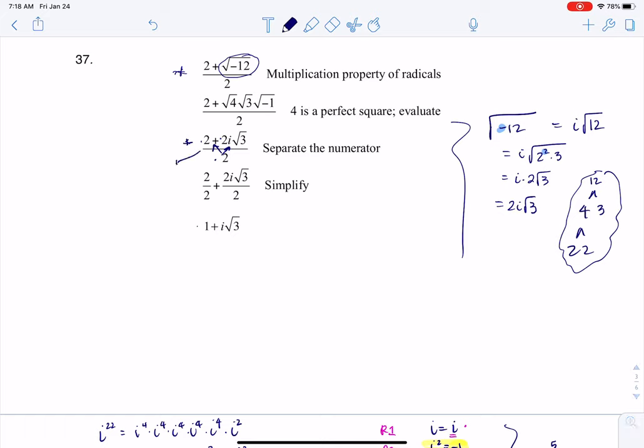Another way of looking at it is I could factor a 2 out of the numerator, which gives me 1 plus i√3, and I have a 2 here. Then the numerator 2 and the denominator 2 would cancel, leaving me with 1 plus i√3.